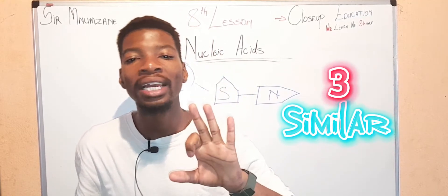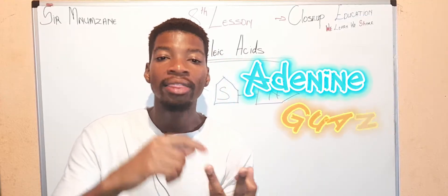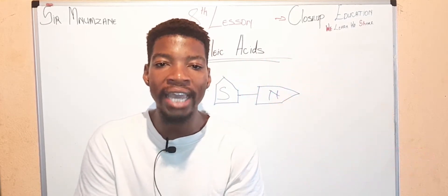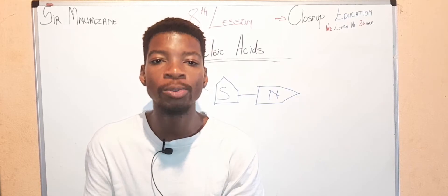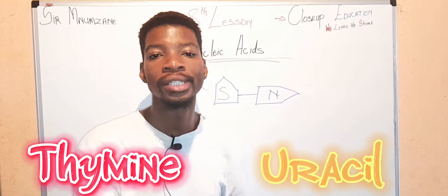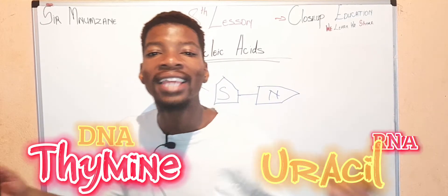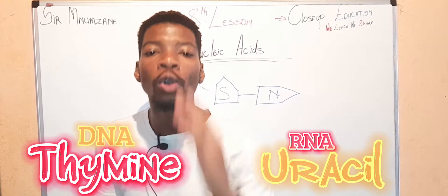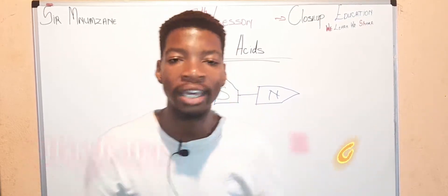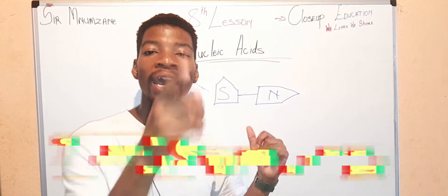What about nitrogenous bases? We know that they have three similar nitrogenous bases: adenine, guanine, and cytosine. They only differ when it comes to thymine and uracil. DNA consists of thymine, which pairs with adenine, while RNA consists of uracil.